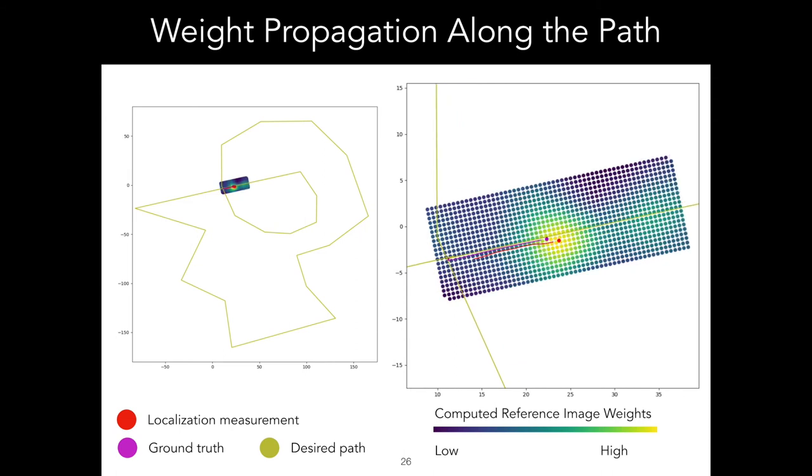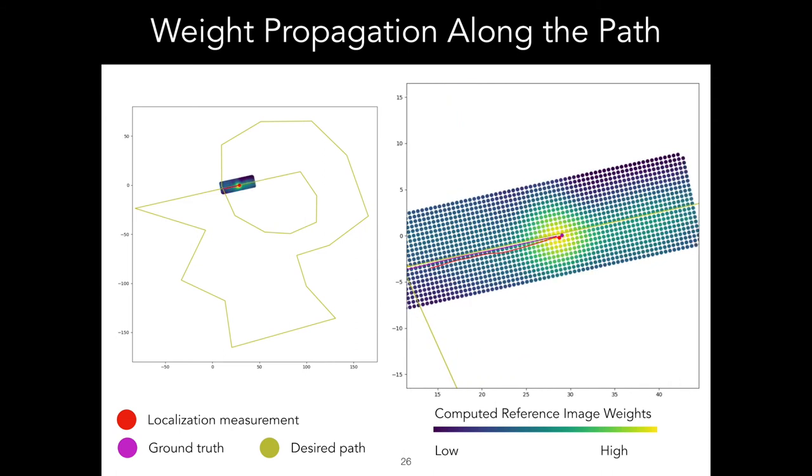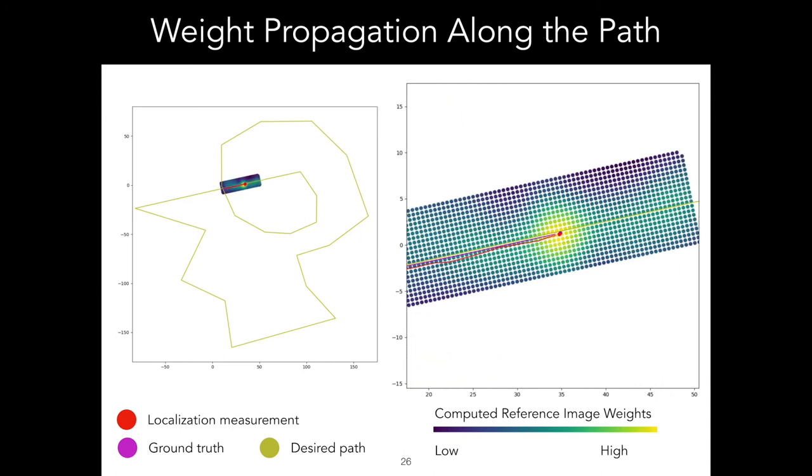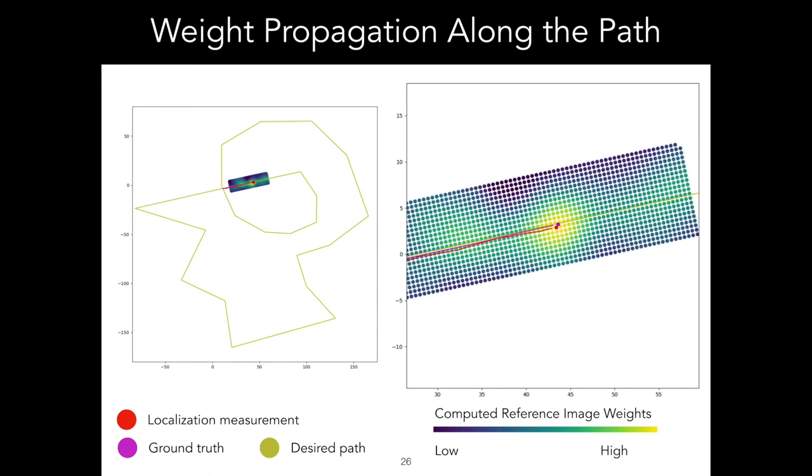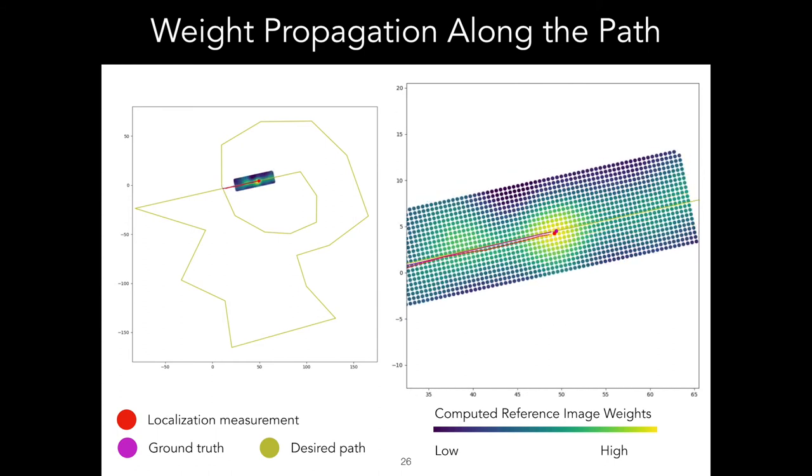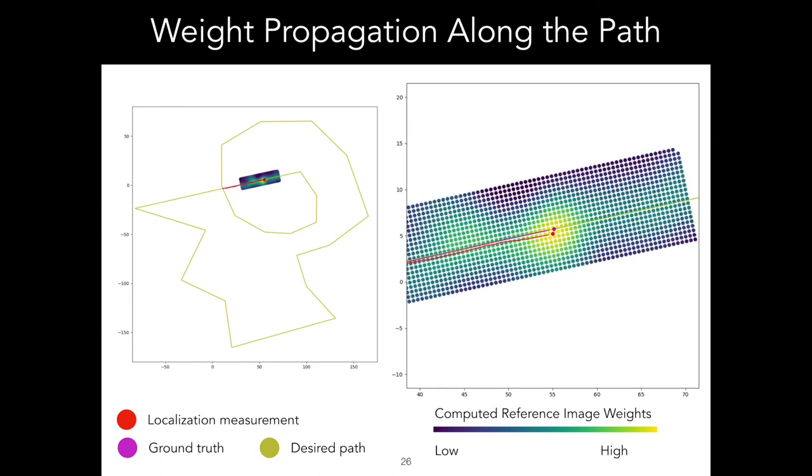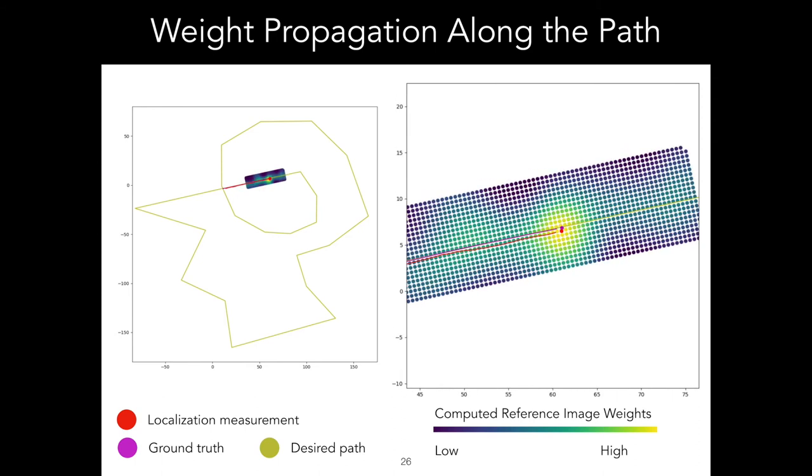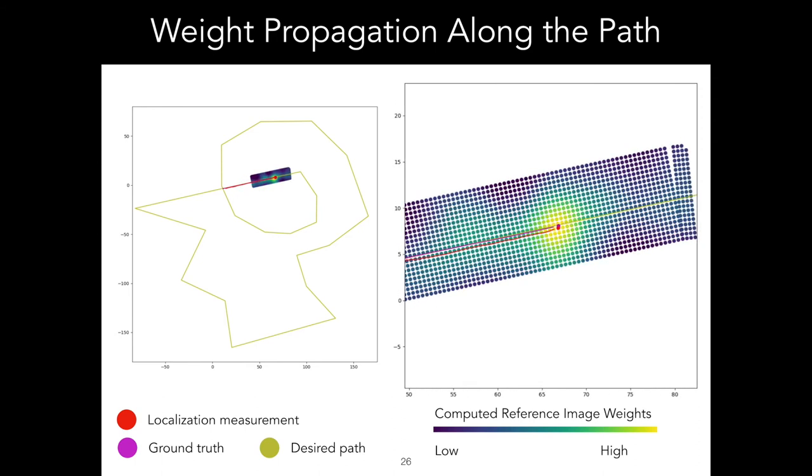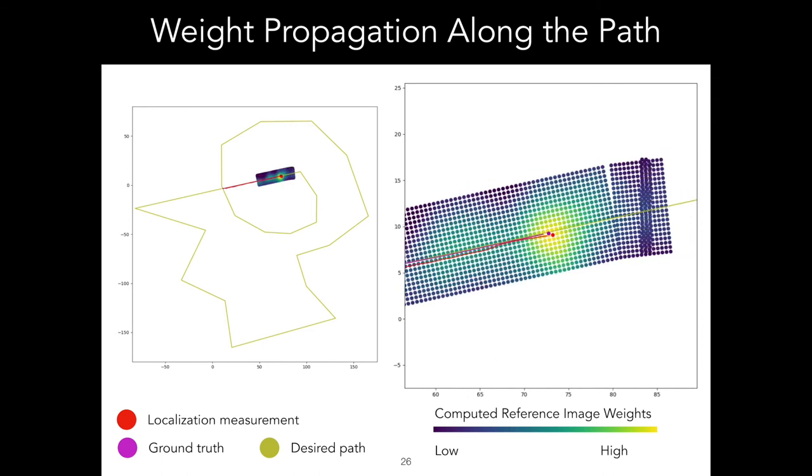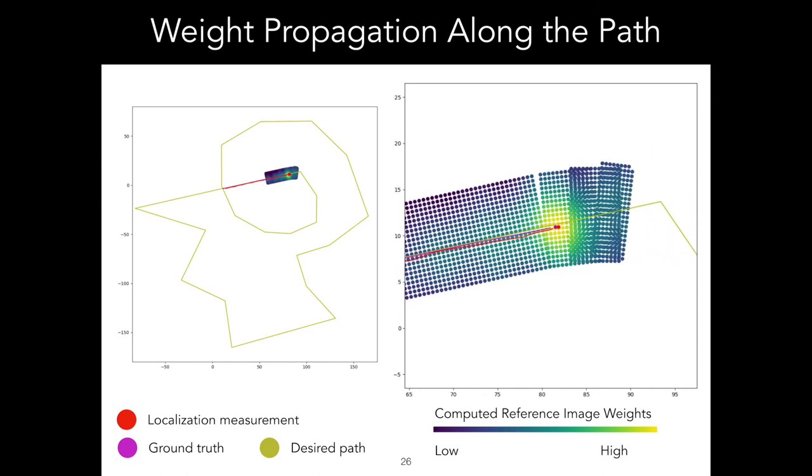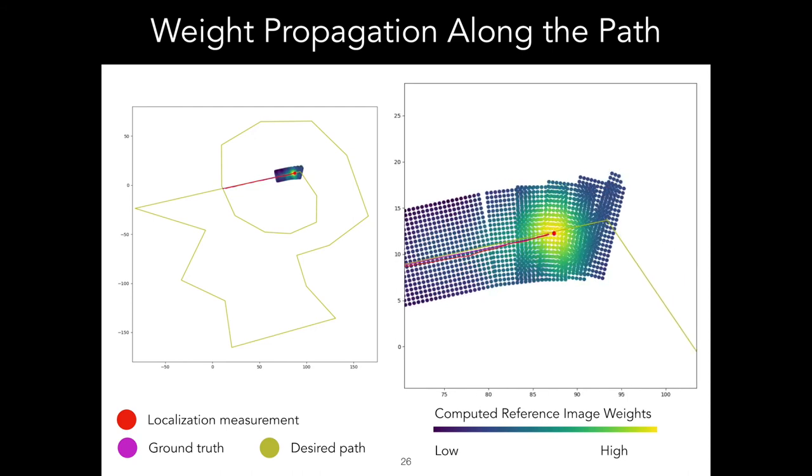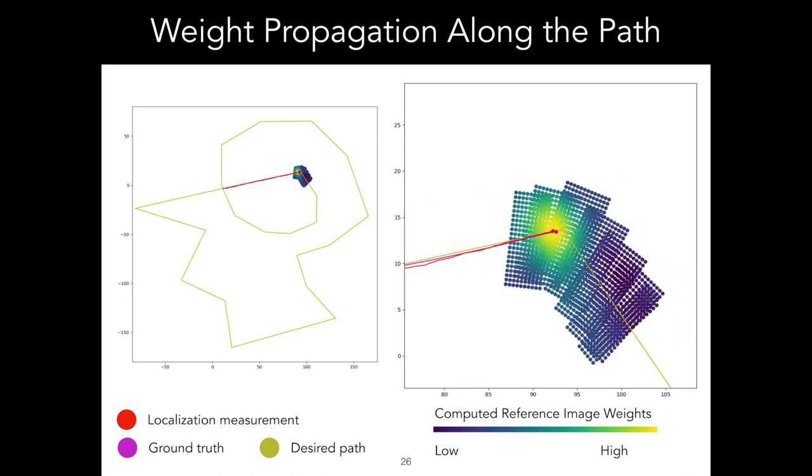In this video, we see that as the UAV moves along the path, which is shown by the magenta dot denoting the ground truth, the subset of reference images moves as well. The corresponding weight that has been computed for each referenced image is indicated by the purple to yellow color scale, where yellow indicates a high weight. The resulting localization, which is shown in red, very closely tracks the ground truth.